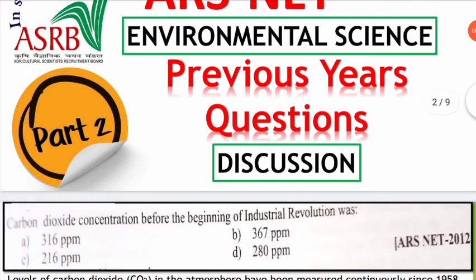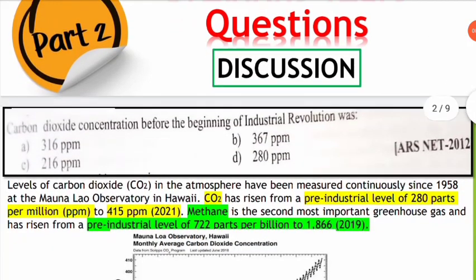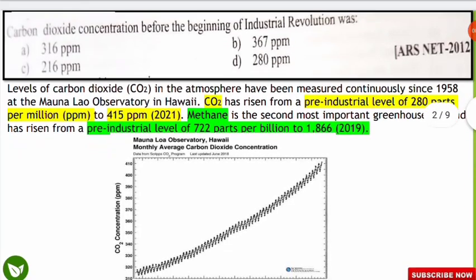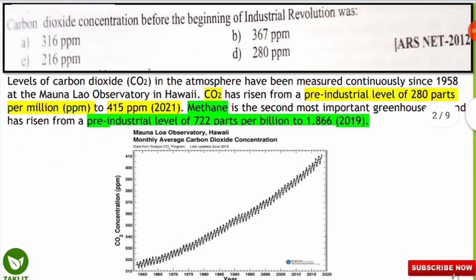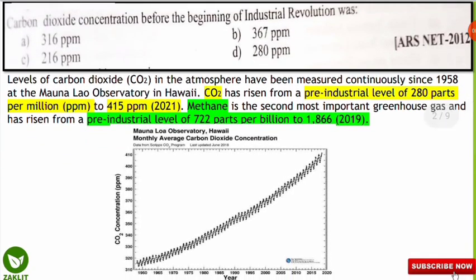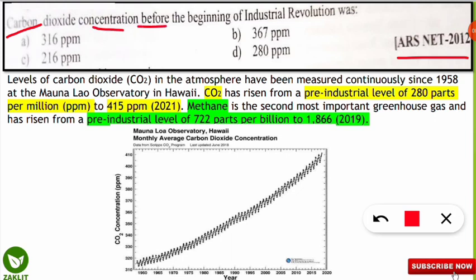If you haven't checked the previous parts in this series, you can check the link provided in the I button — covering how to prepare and what is the syllabus, so that it will be helpful in the examination. Today's first question is taken from the ARS Net 2012 examination: the carbon dioxide concentration before the beginning of the industrial revolution was of how much quantity?